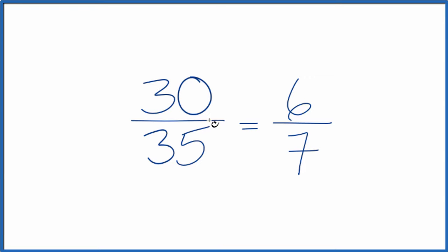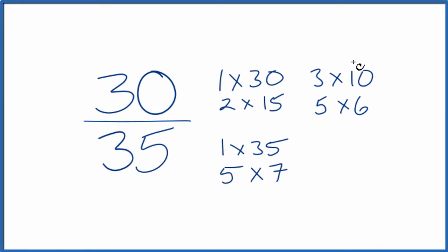If you didn't know that, you could write the factors out for 30 and 35 and look for the greatest common factor. So these are the factors for 30 and these for 35. We're looking for the greatest common factor. And that is, it looks like 5 is the greatest common factor.